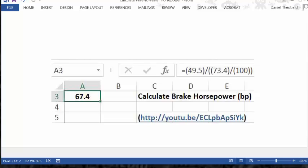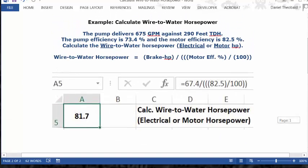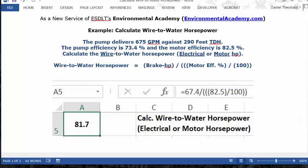You see the formula, the description, URL, and you see the answer. So then you can see how the 67.4 actually works in our basic formula up here to calculate wire-to-water horsepower.